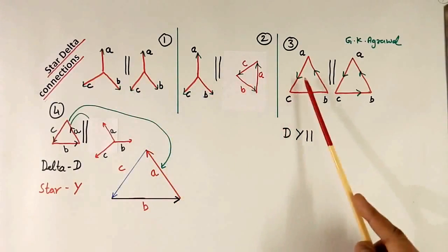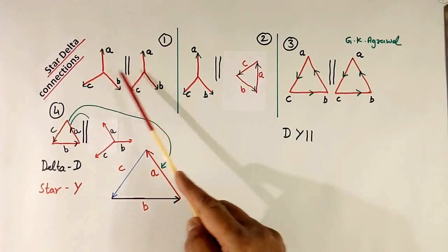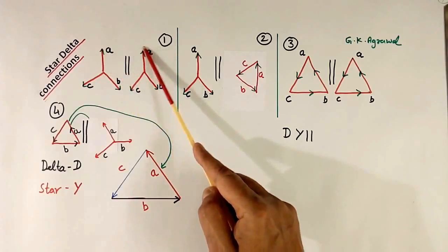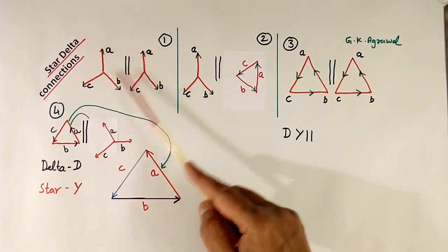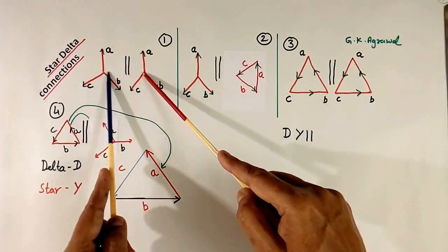Star-star, star and delta, delta-delta and delta-star. This is star-star. Primary voltage, secondary voltage of phase A, exactly similar. Similarly B, exactly similar. Both are giving same direction.